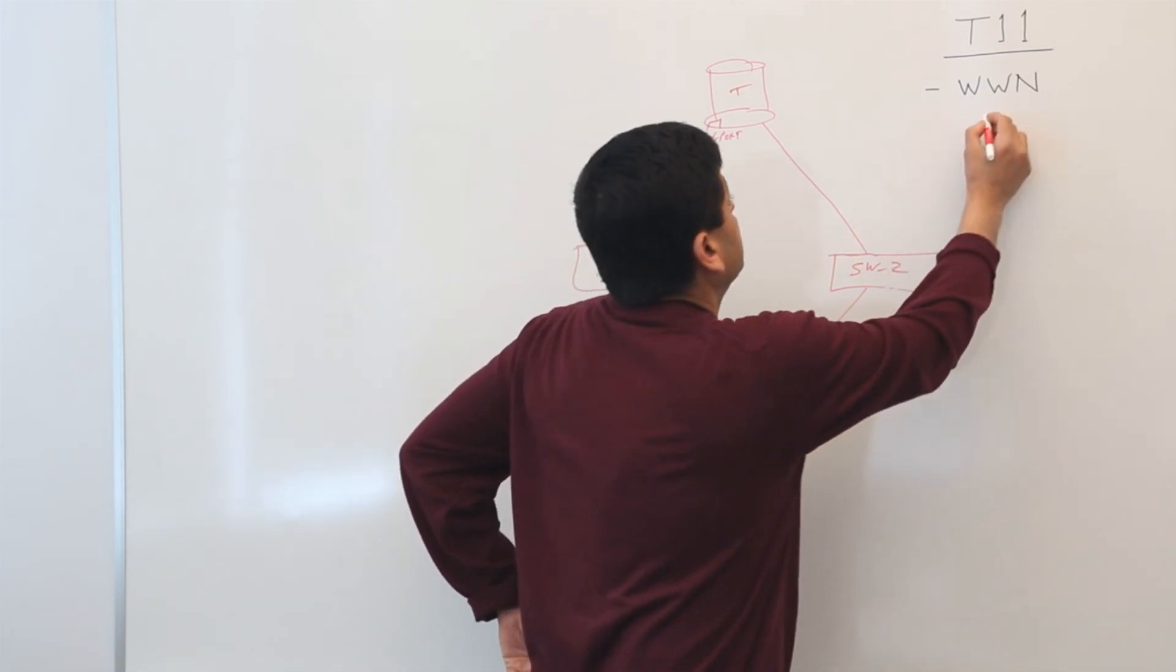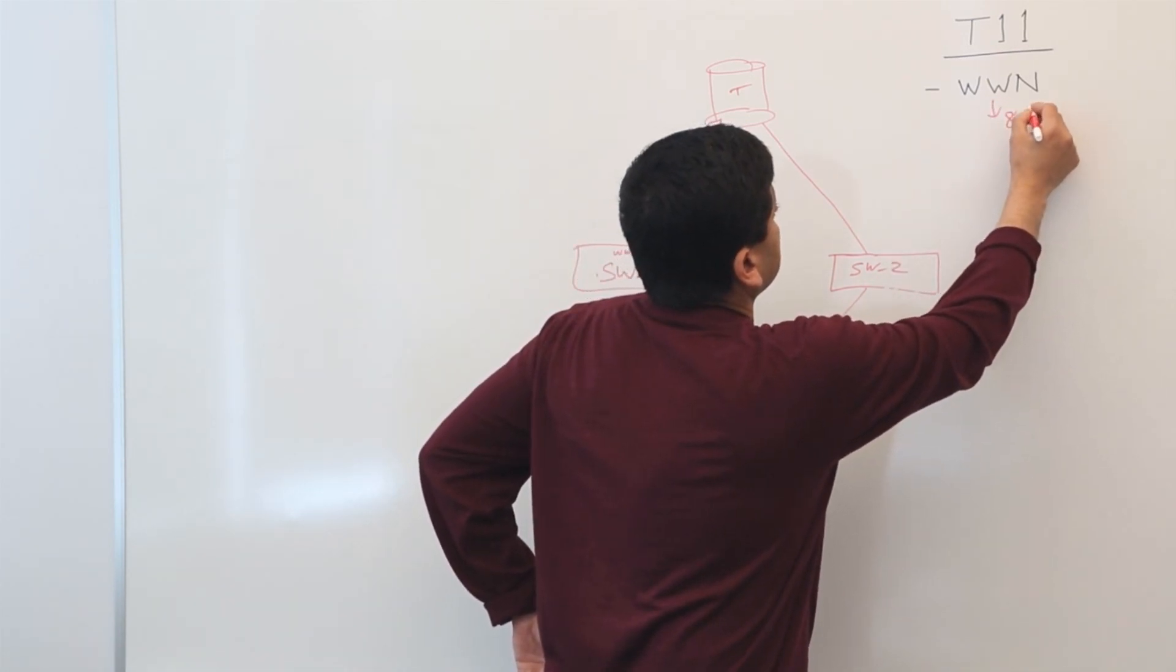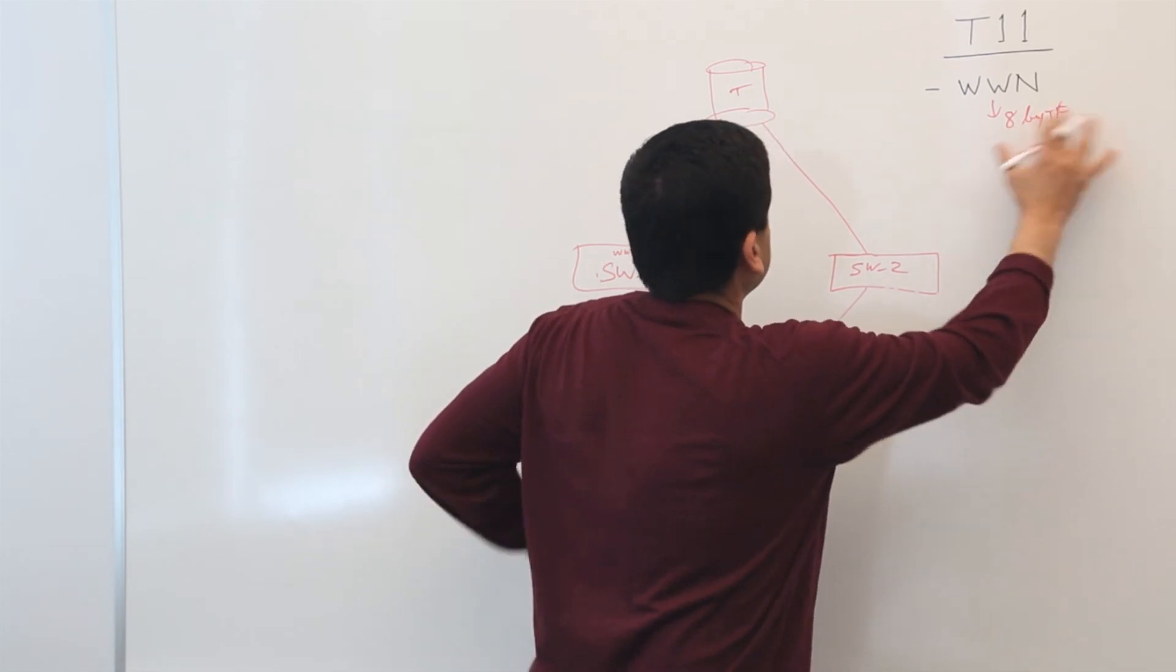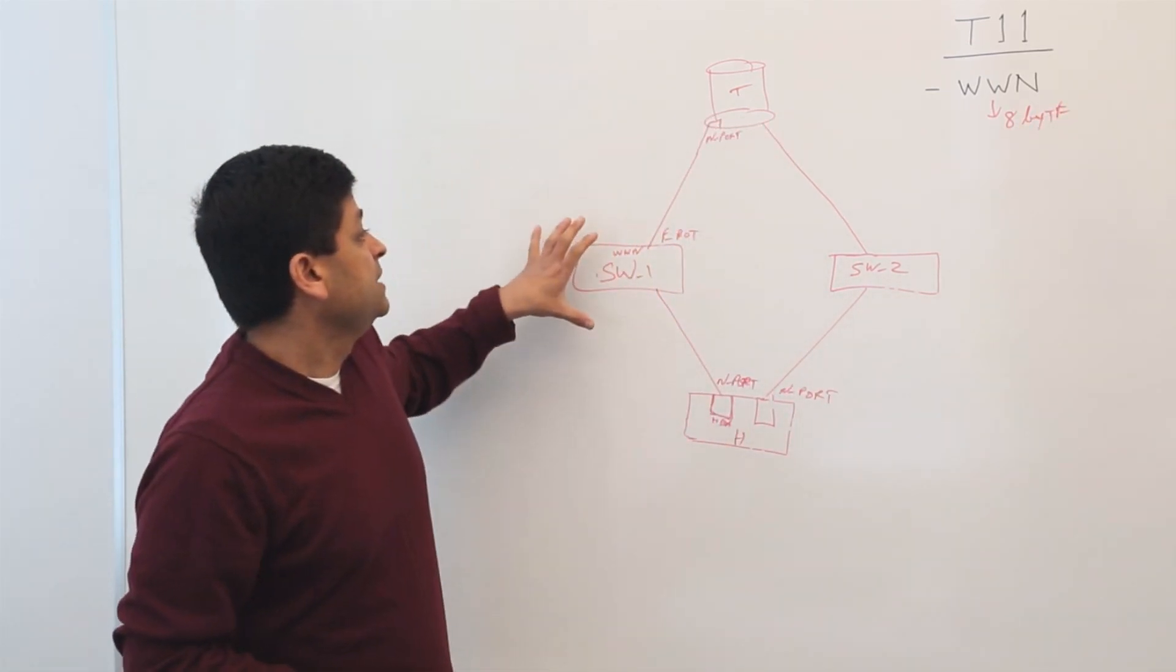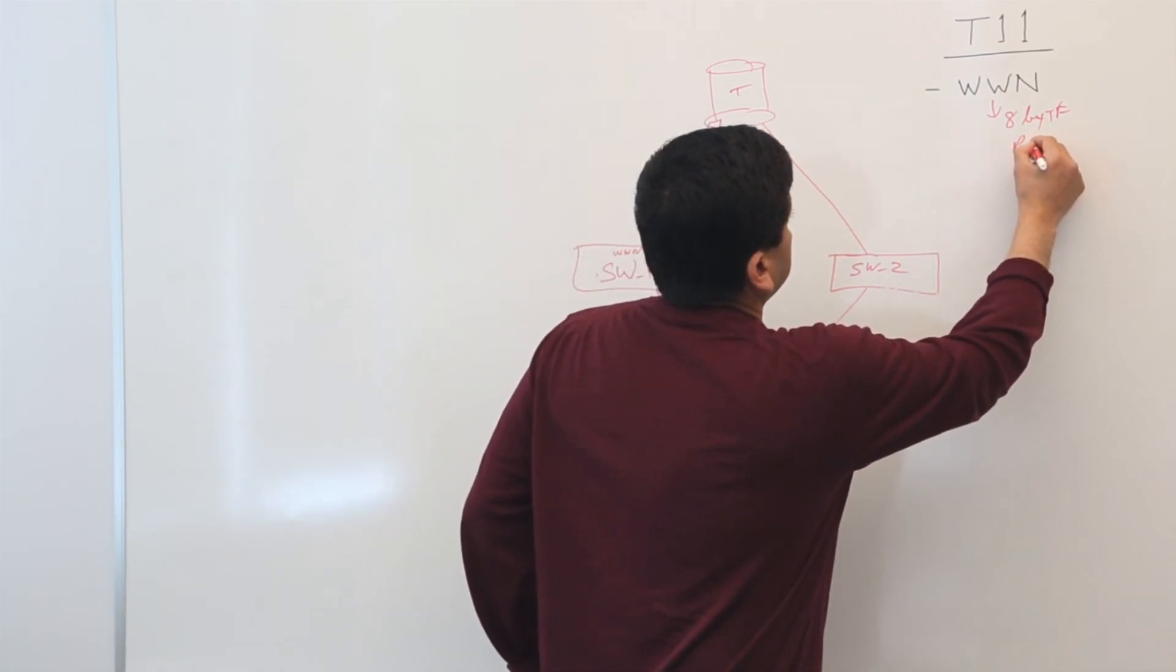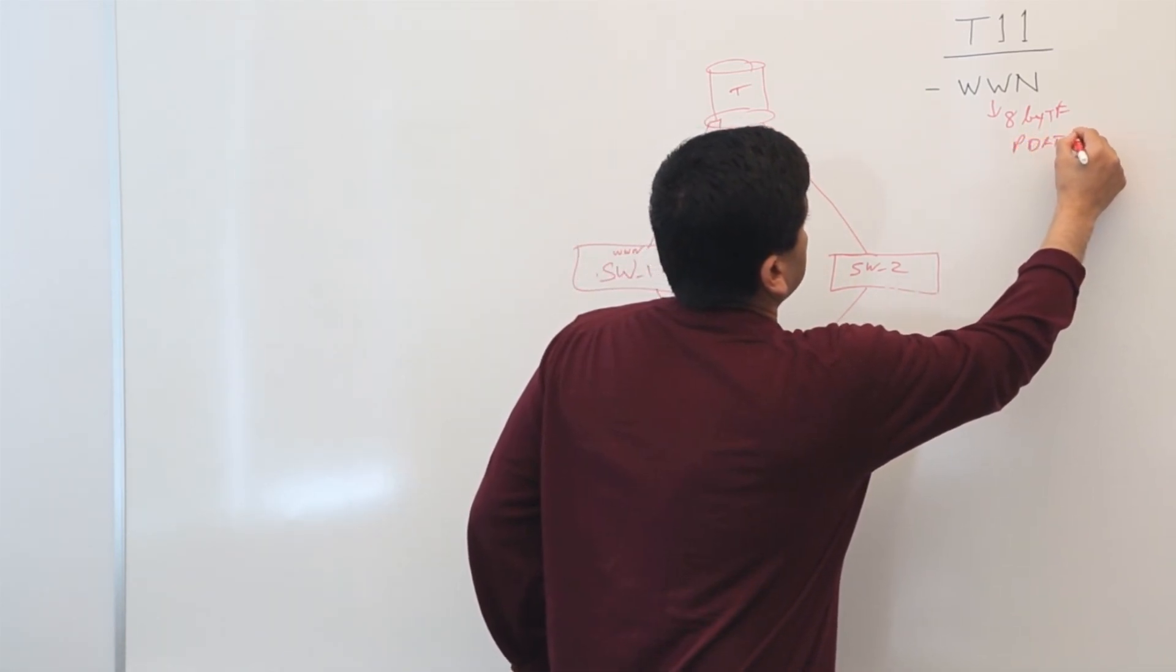So WWN is 8-byte long. And there are two components in WWN. There is a port WWN, or you might have heard a term called WWNP.